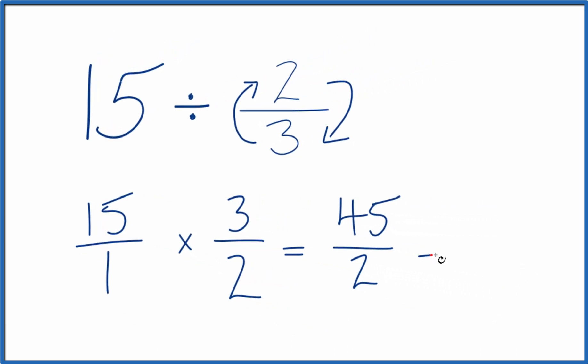So we could change it to a mixed number. 2 times 22, that would give us 44. We have 1 left over. So we could call 45 over 2, same thing as 22 and a half.